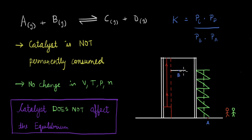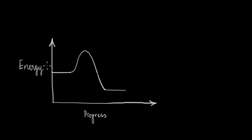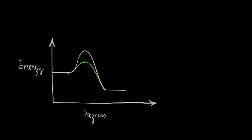Now let's look at the role of a catalyst using an energy diagram. We have a plot of energy on the y-axis and the progress of the reaction on the x-axis. As we go from the reactant side to the product side, there is a barrier that has to be overcome — a certain amount of energy has to be provided. What a catalyst does is stabilize the reaction intermediate. Thinking of the energy at the peak as that of the reaction intermediate, the catalyst finds an alternative path for the reaction to proceed, and with this path the activation energy is lower.